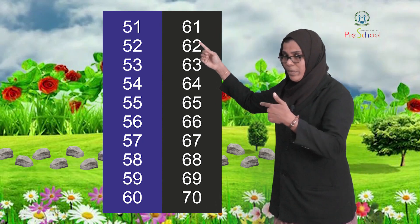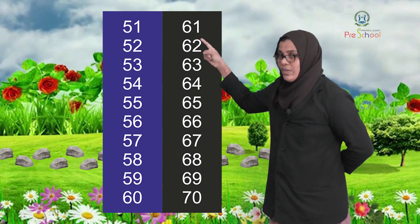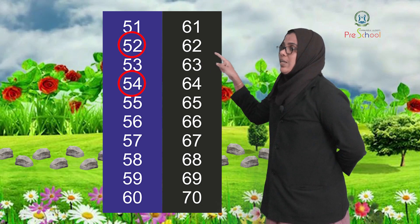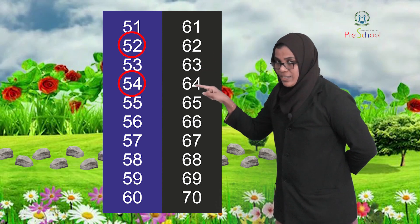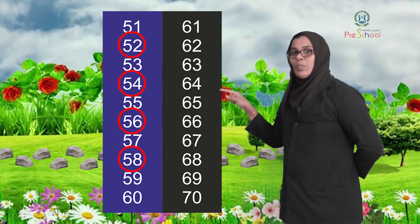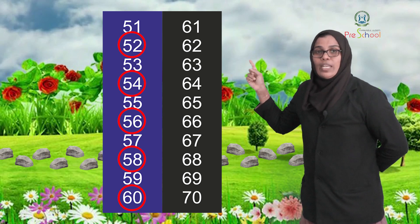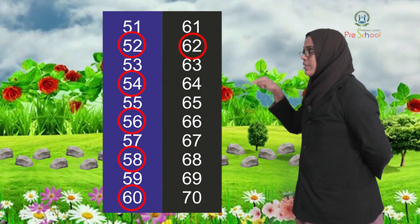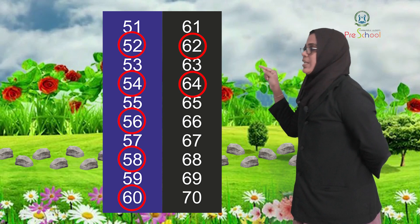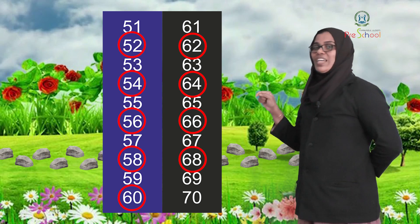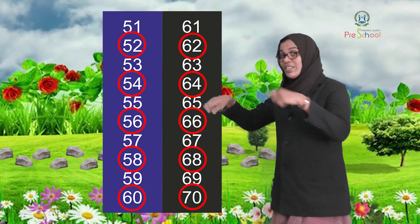So fifty-one we leave, fifty-two we circle; fifty-three we leave, fifty-four we circle; fifty-five we leave, fifty-six we circle; fifty-seven we leave, fifty-eight we circle; fifty-nine we leave, sixty we circle. Then sixty-one we leave, sixty-two we circle; sixty-three we leave, sixty-four we circle; sixty-five we leave, sixty-six we circle; sixty-seven we leave, sixty-eight we circle; sixty-nine we leave, seventy we circle. This is counting by twos.